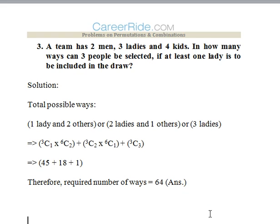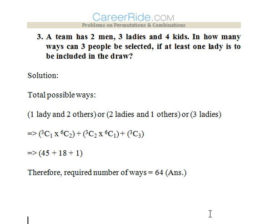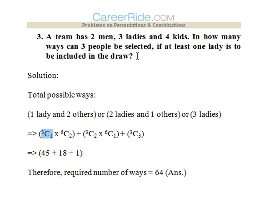Third question: A team has 2 men, 3 ladies and 4 kids. In how many ways can 3 people be selected if at least 1 lady is to be included? The cases are: 1 lady and 2 others — 3C1 into 6C2; or 2 ladies and 1 other — 3C2 into 6C1; or all 3 ladies — 3C3. By calculating NCR we get 45 plus 18 plus 1, which gives 64 as the required number of ways.